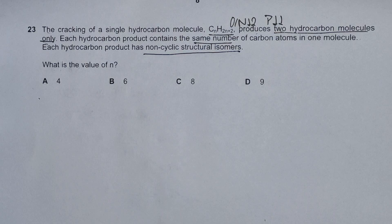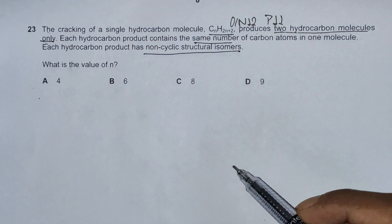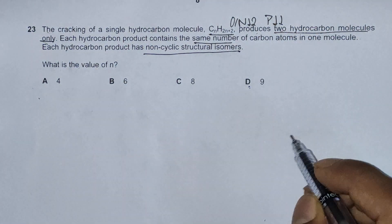Looking at the answer choices, first of all we have to approach this question via the plug-in method. But looking at the answer choices, we can reject D because the hydrocarbon is alkane.